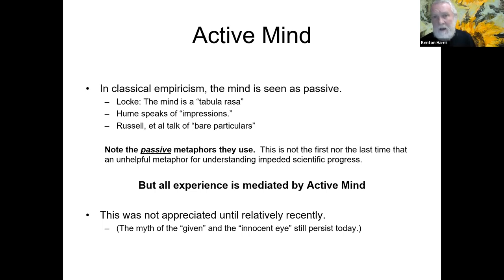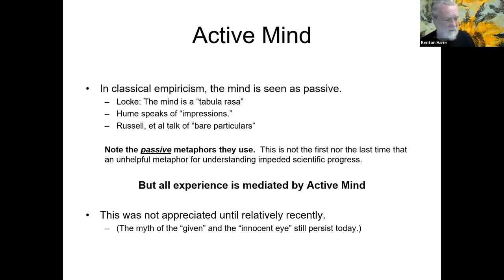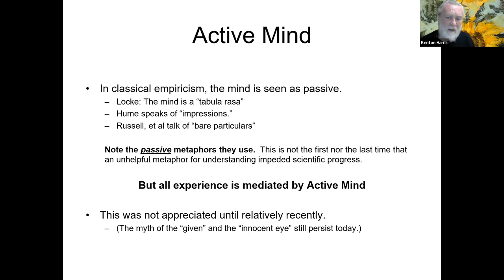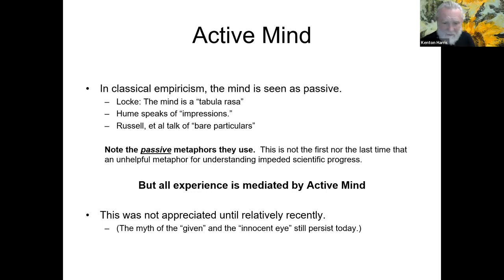What Kant is going to suggest is that the poverty of this view — and the poverty of both rationalist and empiricist conceptions of knowledge in early modern philosophy — were due to this unhelpful, misleading metaphor that the mind is passive in perception. The correction is to point out that the mind is not passive but rather active, and that our experience is the product of active mind.